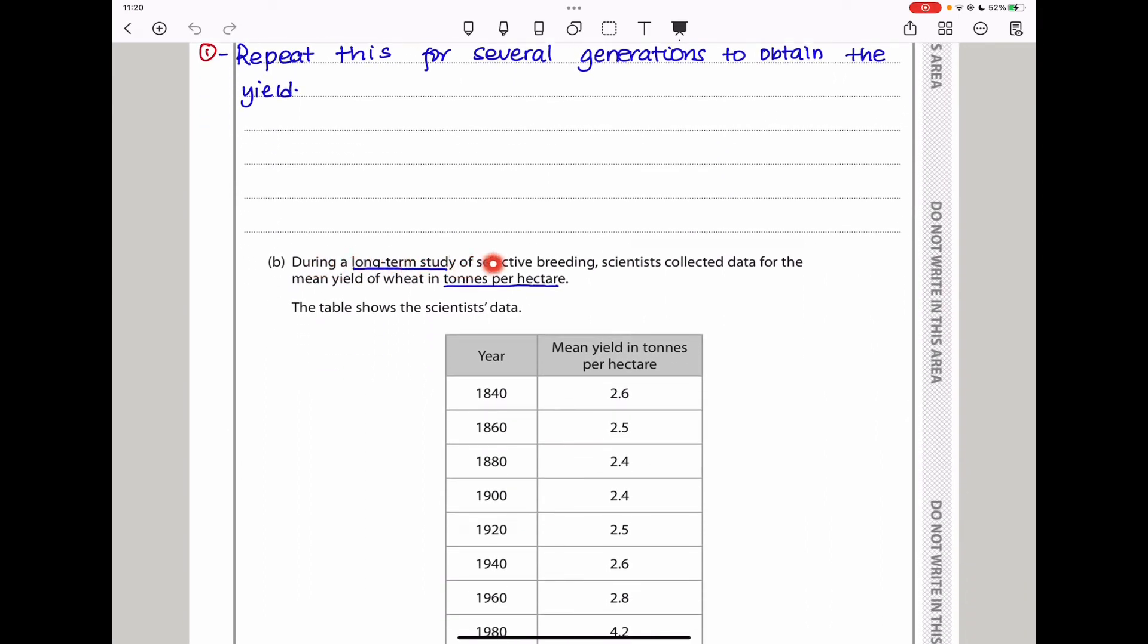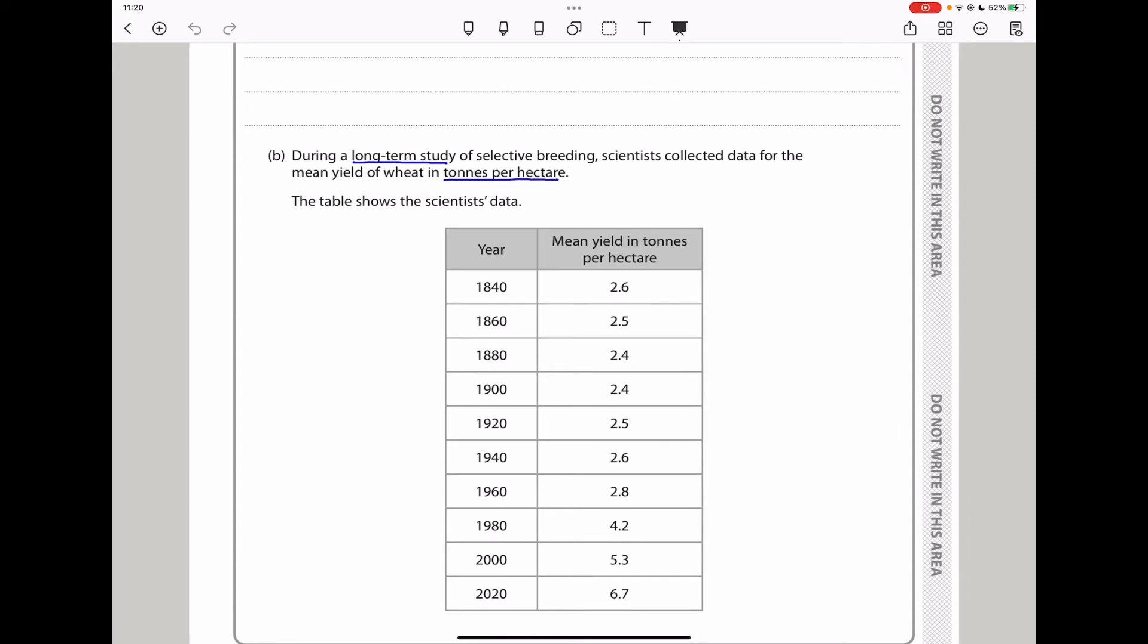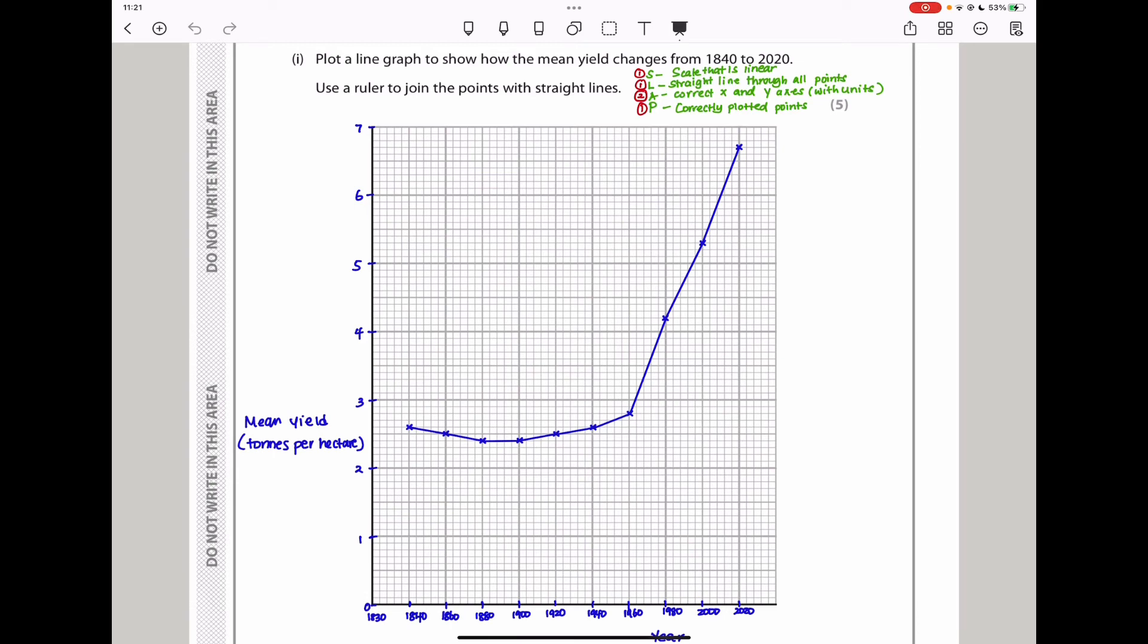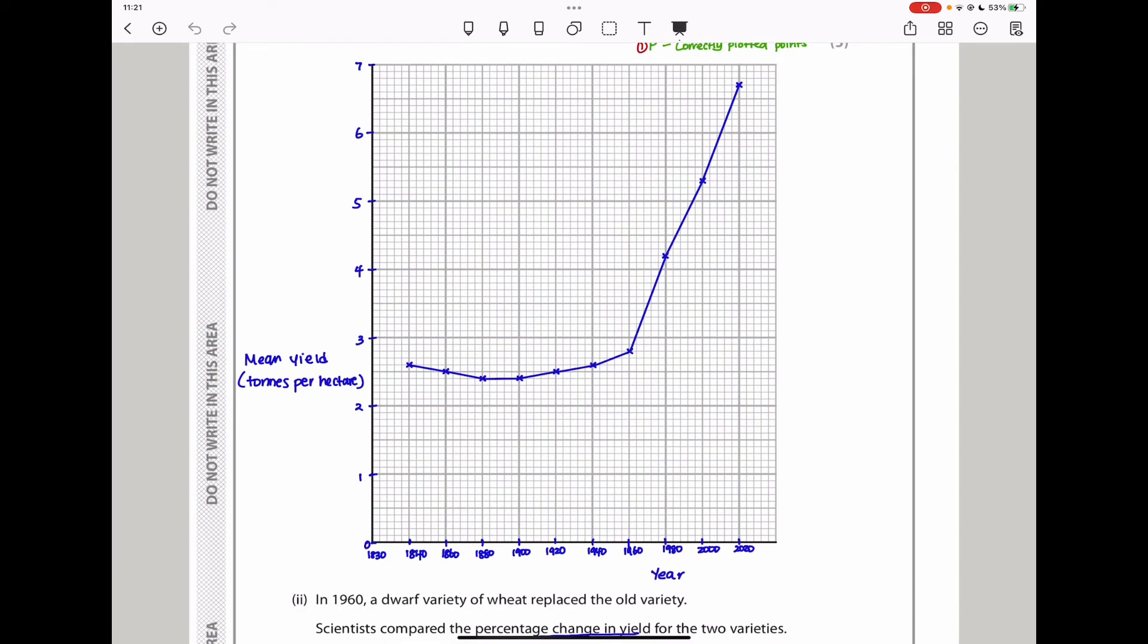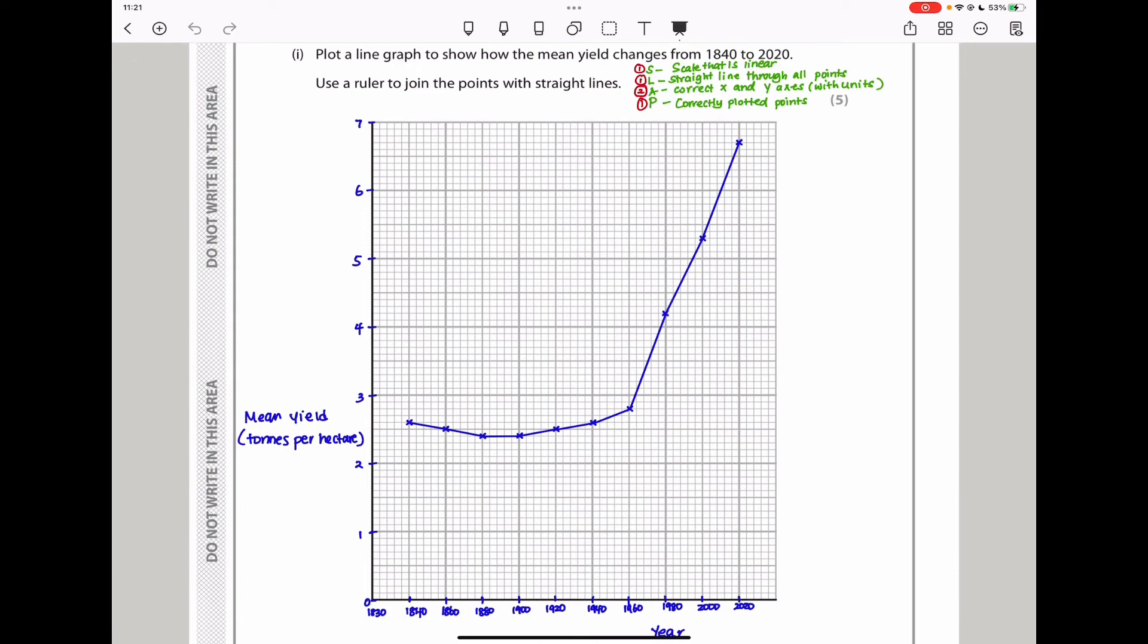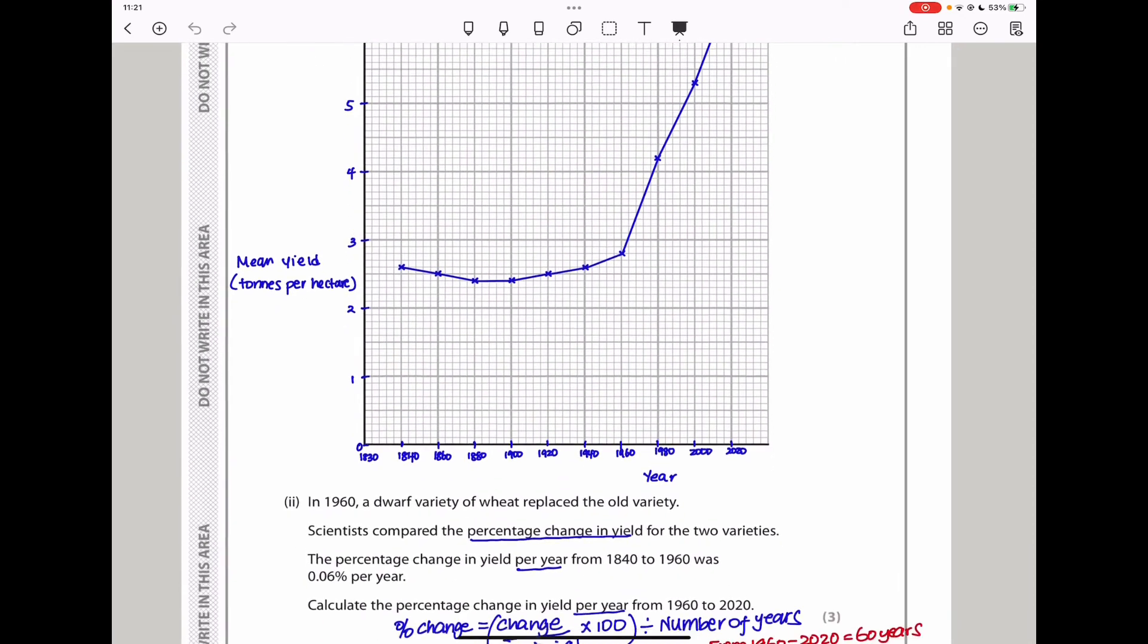Down here they say, during a long-term study of selective breeding, scientists collected data for the mean yield of wheat in tons per hectare. And the table shows the scientists' data. Here they said, plot a line graph to show how the mean yield changes and use a ruler to join points with a straight line. So here I had to use the table to plot the data. The scale was from 0 to 7. And here I positioned the years as given in the table. And then I put every point. Just go putting every point and then connect them using a straight line. Remember to label the y-axis as mean mass in tons per hectare. And here this has to be in years. You have to make sure you use an appropriate scale, use a straight line through all the points, and then you have to use the correct x and y-axis.